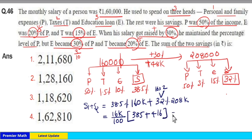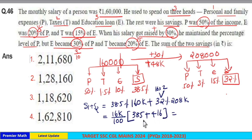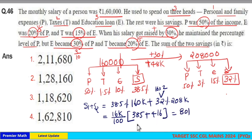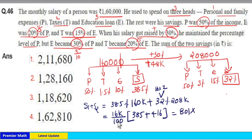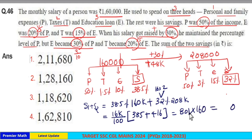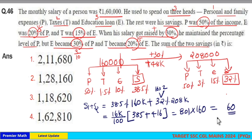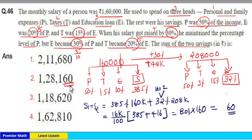385 plus 416 equals 801. So the total is 801 × 16/100 × 100, which gives 801 × 160. The result ends in 60. Looking at the options, the answer with 60 at the end is option 2.